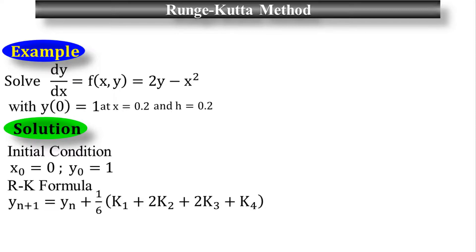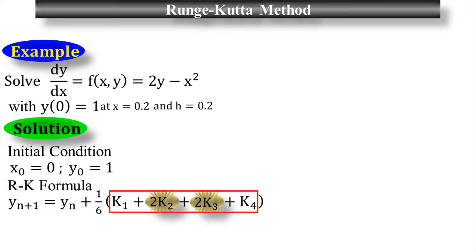k₁, k₂, k₃, and k₄ are the four stages of this process. 1/6 is the average of all four stages, because 2k₂ and 2k₃ together give 4k, so in total there are 6 k's, making the average 1/6.